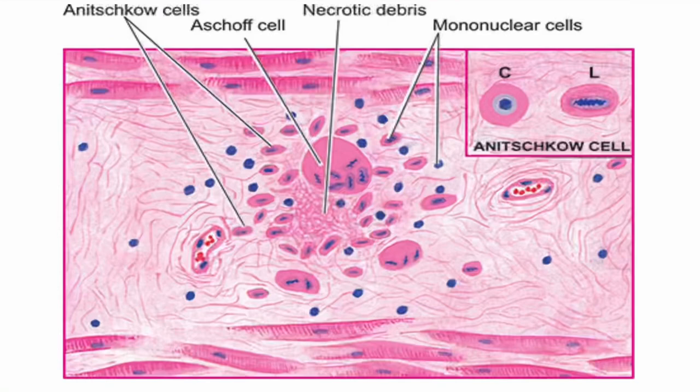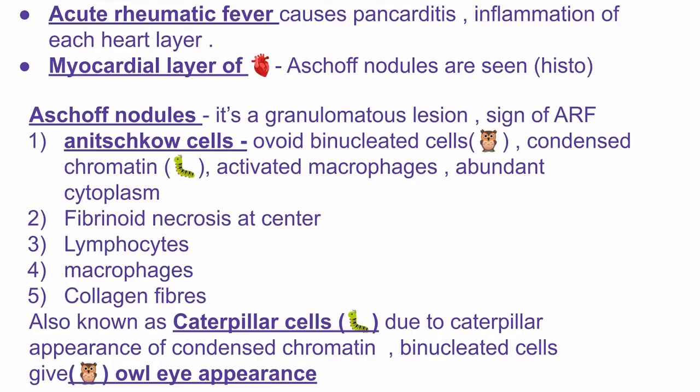Looking at the picture, whatever you see in between — this necrotic debris is the central necrosis happening in the Aschoff nodule. These blue things are the mononuclear cells. You can also find the lymphocytes, collagen fibers, macrophages, and Anitschkow cells.